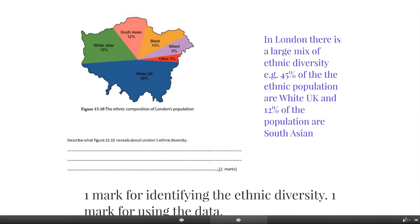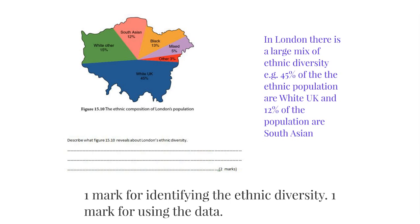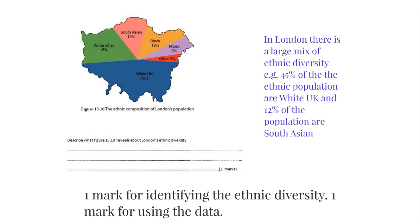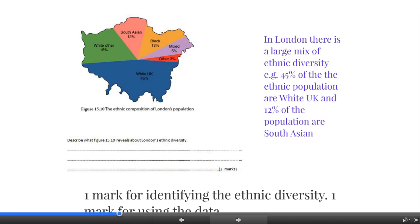The next question was also a graph question, but this time it asked you to look at a pie chart showing the ethnic composition of London's population. This is a two mark question and it simply asks you to describe — description is a really easy skill, just based purely on observations. It says describe what figure 15.10 reveals about London's ethnic diversity. One mark for identifying that it is an ethnically diverse city, and a second mark for using the data. For example, 45% of the ethnic population are white UK and 12% are South Asian. If they give you a graph, the data is there for a reason — make sure you use it.